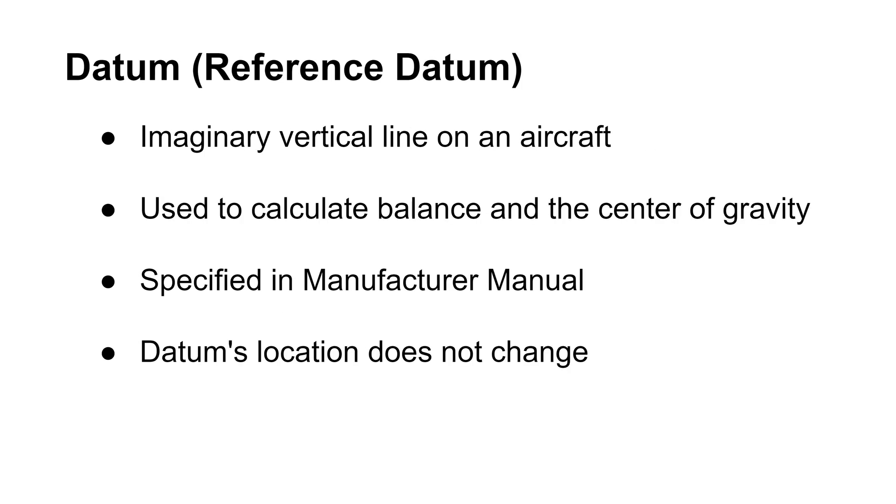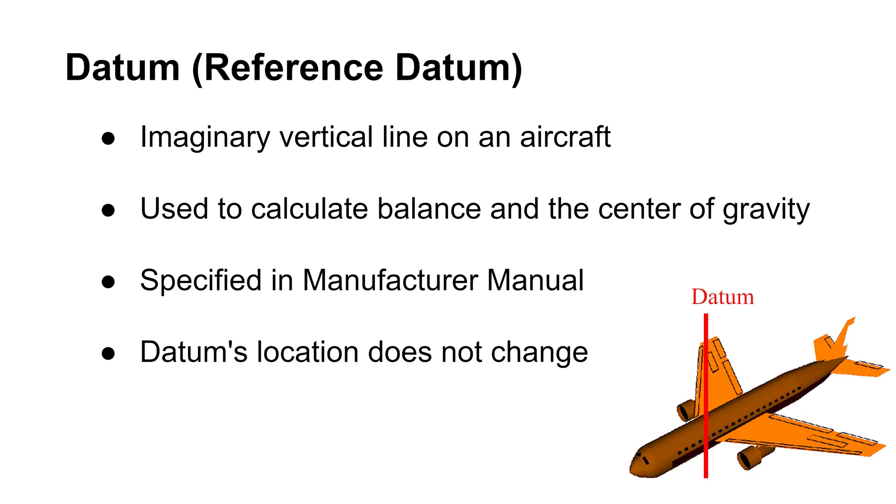The next notion is the datum or reference datum. It refers to an imaginary vertical line on an aircraft. You use datum to calculate balance and the center of gravity. The aircraft manufacturer manual will specify how to find the location of the datum. The datum's location doesn't change.